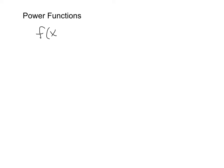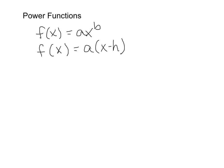A power function is any function in the form f(x) = ax^b. Or if you want to think about it in transformation form, it would be f(x) = a(x - h)^b + k, where b is any power and a, h, and k are your basic transformations.